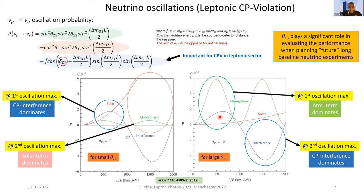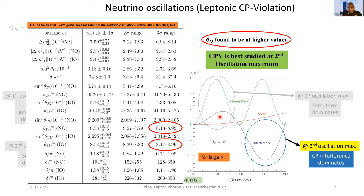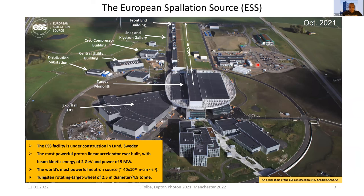At the beginning of this decade, neutrino reactor experiments proved that theta-one-three is indeed at higher values, indicating that CP violation is best studied at the second oscillation maximum. However, this comes with a price of lower statistics or higher beam intensity requirements. Luckily, not far away here in Europe, there is a large facility called the European Spallation Source, ESS, which is going to be the most powerful proton linear accelerator ever built, under construction in Lund, Sweden, with 2 GeV beam kinetic energy and 5 megawatt power.